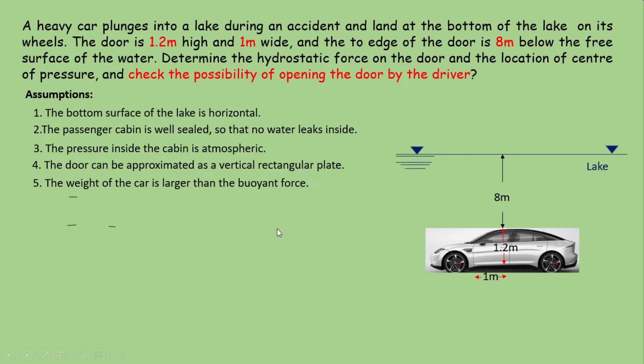Total hydrostatic force acting on the door can be calculated as P equal to rho g into A into h bar. Rho g means specific weight of water. A is area of the plate that is equal to 1.2 into 1, and h bar is the distance of the center of gravity of this rectangular plate with respect to the free surface that is equal to 8 plus 1.2 by 2. So density into 9.81 gives the specific weight of water multiplied with the area 1.2 into 1 and multiplied with h bar that is equal to 8 plus 1.2 by 2. The resultant hydrostatic force acting on the door equals 101.239 kilonewtons and this hydrostatic force is acting through the center of pressure.